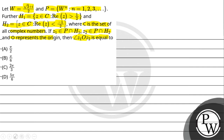So here we have angle z1, O, z2. We have to start with key concepts. We know that e raised to power iota theta can be expressed as cos theta plus iota sin theta. This way, we can express it out.